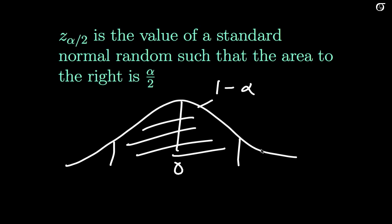The remaining bit, alpha, is split up evenly into the two tails, alpha over 2 and alpha over 2. And this value here we're calling z sub alpha over 2, and that's what we want to find. That's what this video is about.